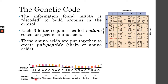These amino acids are put together to create the polypeptide chain. This polypeptide chain — a chain of amino acids — when finally folded, creates our proteins.